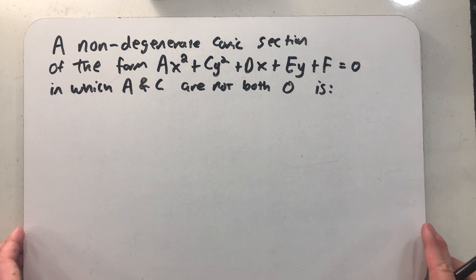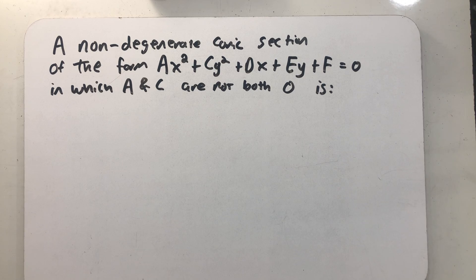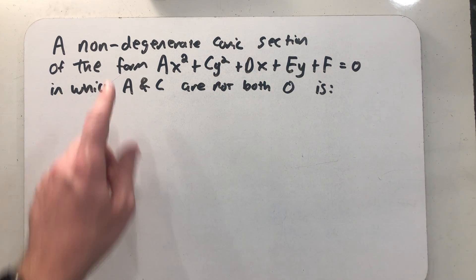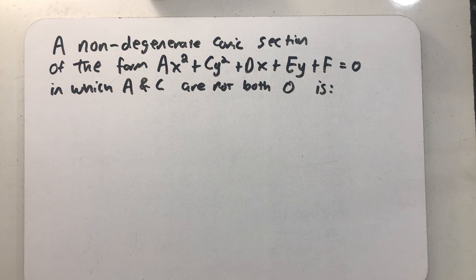In this video, I want to talk about how to identify a conic section from its equation in its general form if we assume it's not degenerate, which is a big assumption.